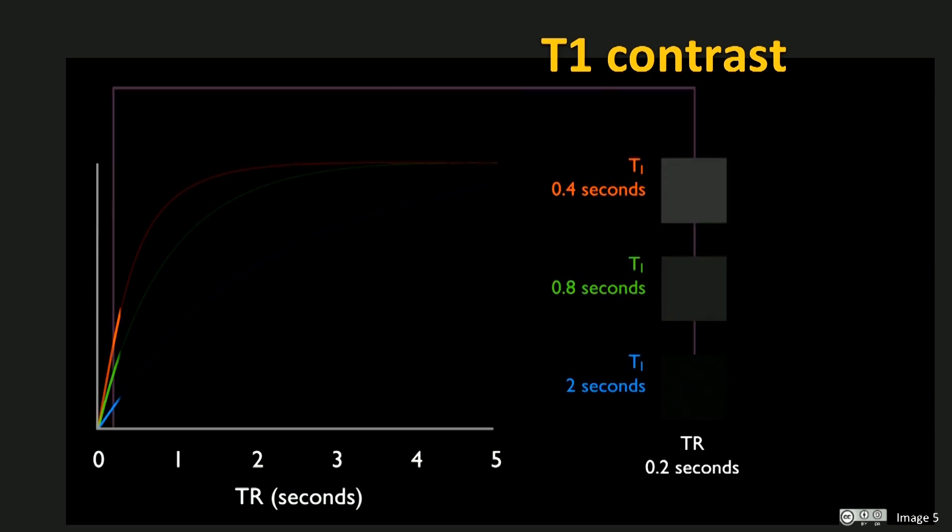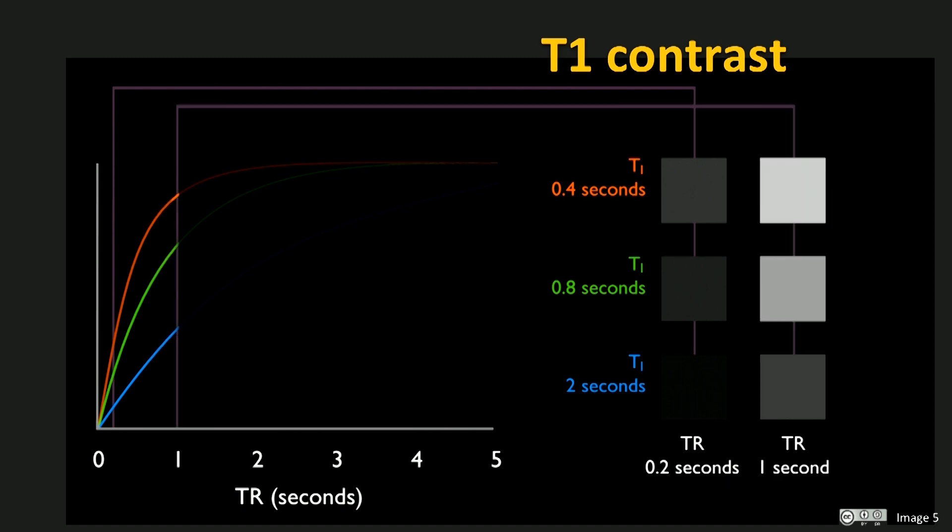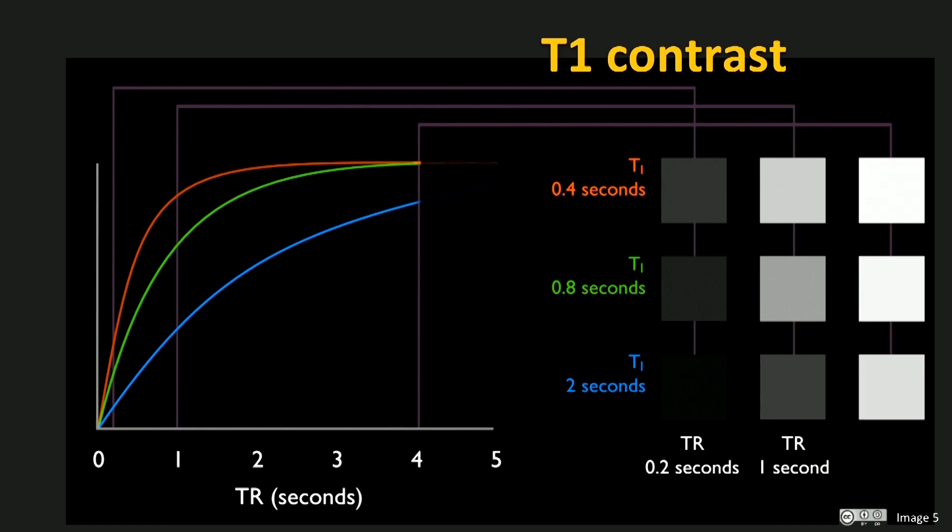We see that for a short TR of 400 milliseconds, all tissues give low signal intensity. At medium TR of 1 second, the contrast between the three tissues is at its highest. And at long TR values, the three tissues have almost completely relaxed and although signal intensity is high, the contrast between them is low.